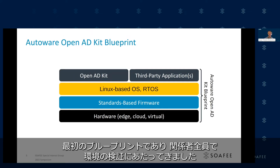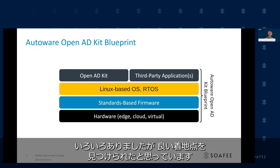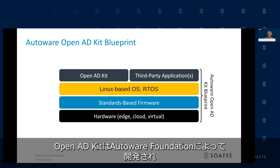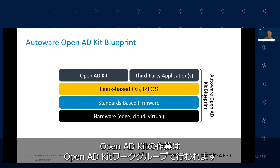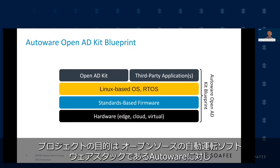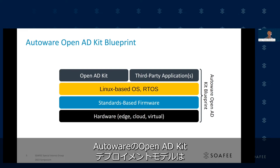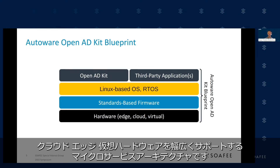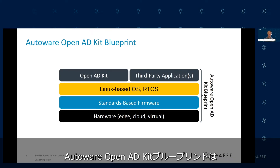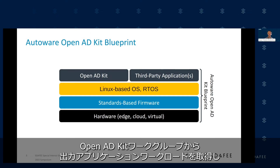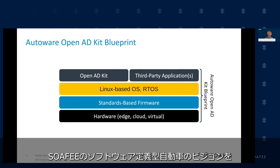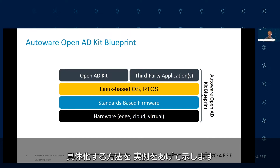The Autoware OpenADKIT blueprint is the very first blueprint and has been a pipe-cleaning exercise for everyone involved. It's been a bumpy ride, and I think we've now landed in a good place. OpenADKIT is developed by the Autoware Foundation, and the work done in it is done in the OpenADKIT workgroup. The project aims to bring software-defined best practices into the open-source autonomous drive software stack Autoware, for example by introducing cloud-native development and production methodologies. The OpenADKIT deployment model for Autoware is a microservices architecture with broad support for the cloud, the edge, and virtual hardware. The blueprint takes the output application workloads from the OpenADKIT workgroup and deploys it in various ways, showing with practical examples how SOFI's vision of software-defined vehicles can be materialized.